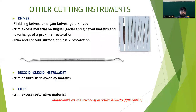Other cutting instruments include knives, the discoid-cleoid instrument, and files. Knives include finishing knives, amalgam knives, and gold knives. They are used to trim excess material on lingual, facial, and gingival margins and overhangs of proximal restorations, and can also be used to trim and contour the surface of classified restorations. The discoid-cleoid instrument is used to trim or burnish inlay and onlay margins. Files can be used to trim excess restorative materials.